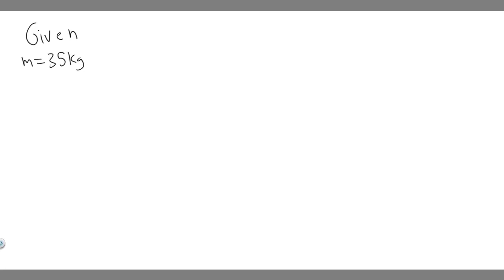When they say bounce every two seconds, essentially what they're doing here is giving you the period. We know the period is equal to two seconds. So what are we solving for? We're trying to solve for the stiffness of the spring, which means we're solving for the constant k.